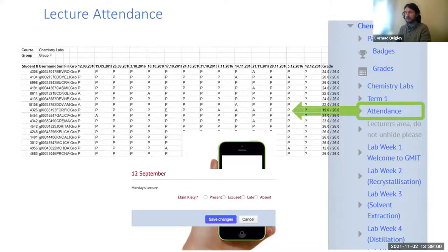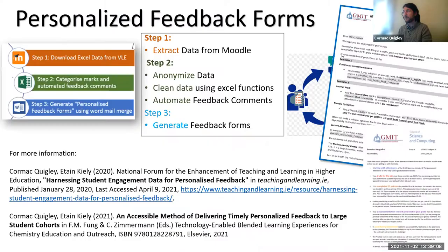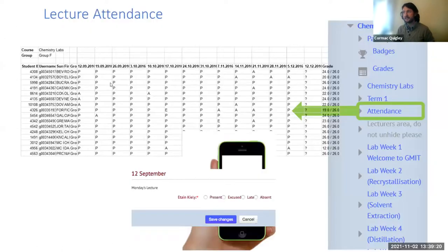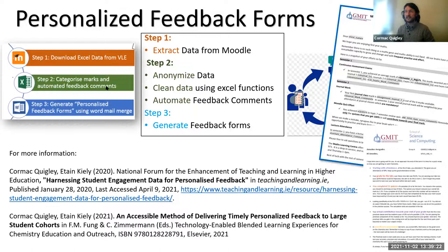Historically, myself and Atain sat down and said, we have all of these data points and these students — how are we going to get it back to them? Our initial analytics project was a really manual kind of thing where we said we want to make personalized feedback forms. So rather than sitting down and writing two, three or 400 letters to the students saying 'this is your performance', we just download the data from the VLE — we take out the attendance, we take out the gradebook, and then we can categorize and automate responses.